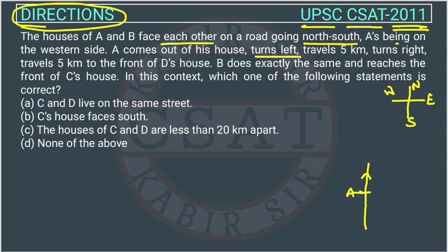He travels 5 kilometers and then turns right. So he is now facing east again after the right turn, and travels another 5 km. He reaches the front of D's house, so D's house is here.